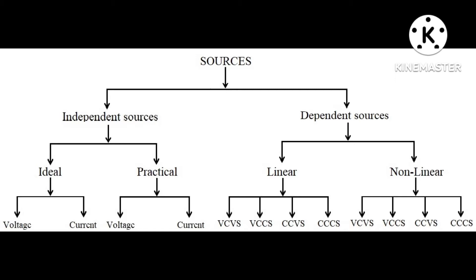Independent sources are divided into two types: ideal and practical. Ideal sources are voltage and current sources. Practical sources are also voltage source and current source. Coming to dependent sources, they are divided into linear dependent sources and non-linear dependent sources.